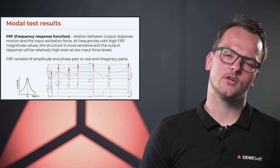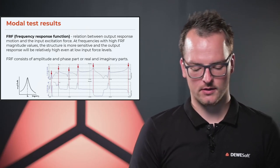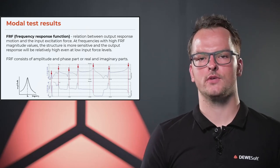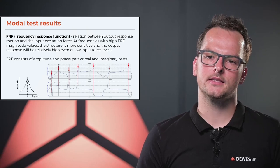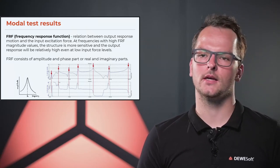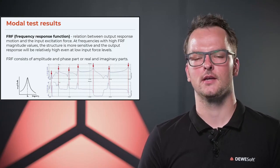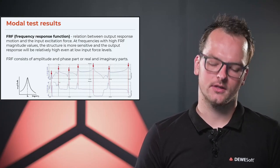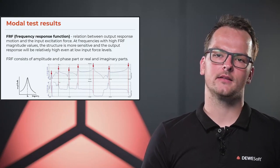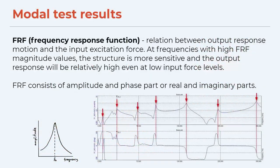What are the results from modal tests? The first and perhaps most important one is the frequency response function, also called FRF. This tells us the ratio between the output response motion and the input excitation force, and what we get is the curve shown on the picture. At frequencies with high FRF magnitude, the structure is more sensitive and the output response will be relatively high even at low input force levels. The FRF is a complex vector, so we have information about amplitude, phase, real part, and imaginary part.